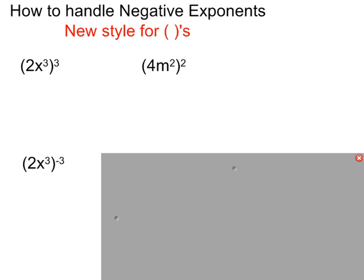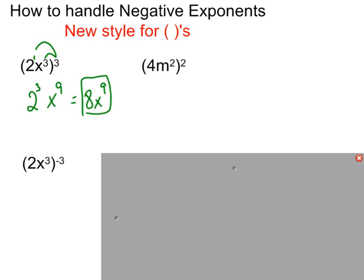Now here's where it usually causes a little bit of an issue — power raised to a power. You take all of the inside exponents and multiply them by the outside exponent. The 2 has an exponent of 1 and x has an exponent of 3. Take the outside exponent of 3 and multiply: 1 times 3 gives 2 to the 3rd power — the 2 stays as the base with its new exponent of 3. For x: 3 times 3 is 9. Everyone's happy, so the final answer is 8x to the 9th power.